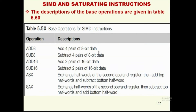In a 32-bit ADD8 instruction, one 32-bit operation equals four 8-bit additions. Similarly, SUB8 subtracts four pairs of 8-bit data. ADD16 adds two pairs of 16-bit data, and SUB16 subtracts two pairs of 16-bit data. ASX means exchange half words of the second operand register, then add the top half words and subtract the bottom half word. SAX means exchange half words of the second operand register, then subtract the top half words and add the bottom half word.